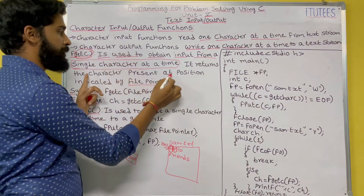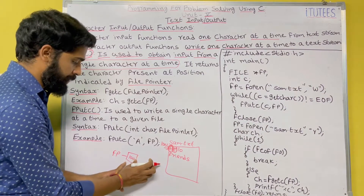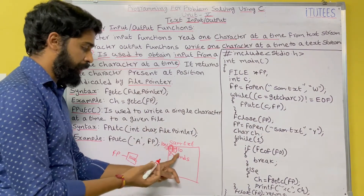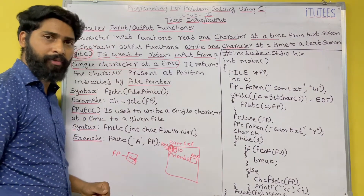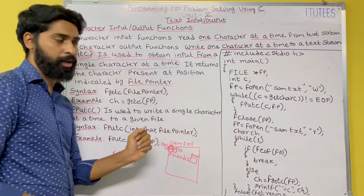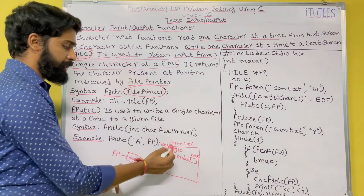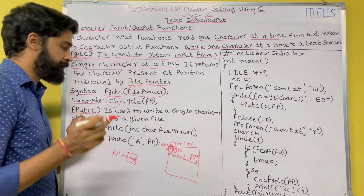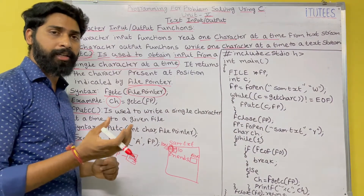It returns the character at the current position — for example fp is at 1001, so it returns 'h'. After reading, the pointer will be incremented to the next location, for example 100d. If you use fgetc again, 'e' is the output and the pointer is incremented to the next location, and so on. When it reaches the end of the file, that is EOF, it returns a constant. The syntax is fgetc(fp), which returns a character at the current position of the file pointer, stored in variable ch. The purpose of fgetc is to read data character by character from a file.